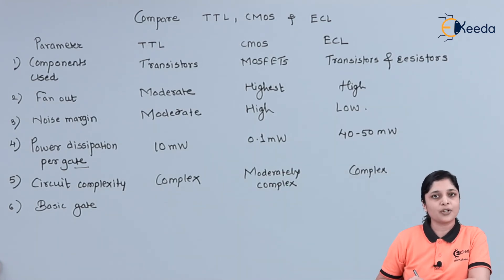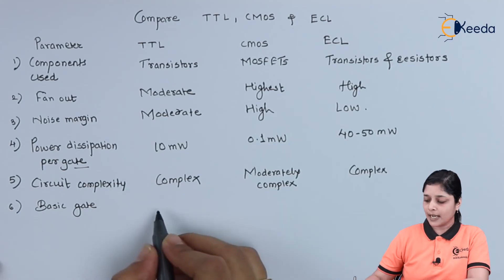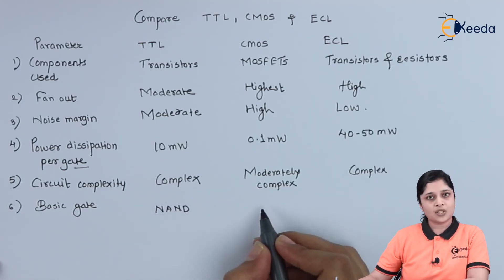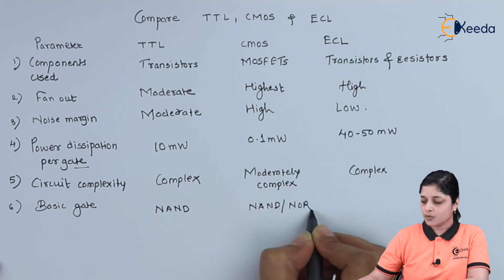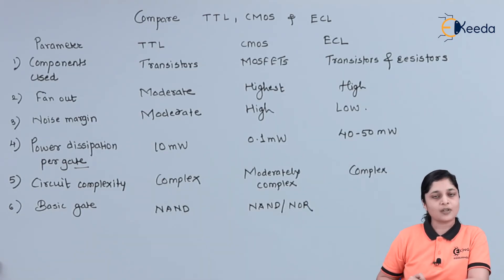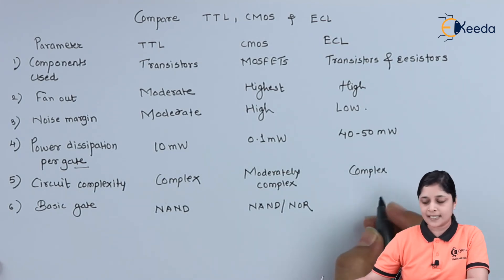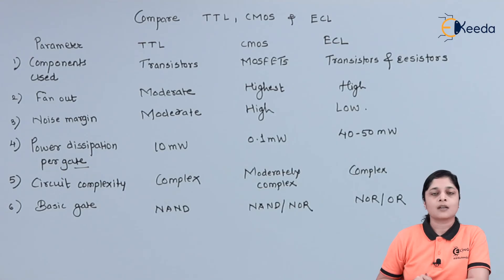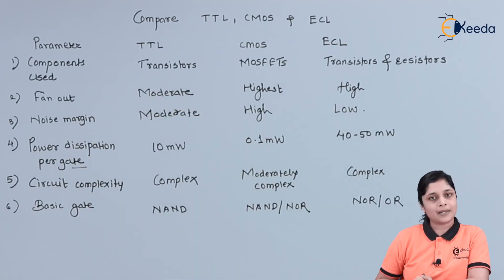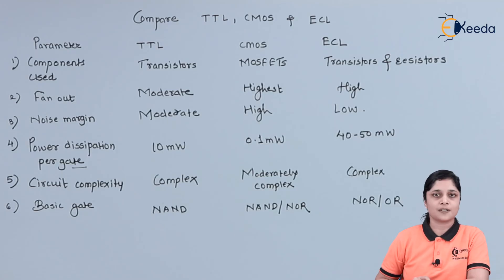The next parameter is the basic gates supported. With TTL you can design the NAND gate. With CMOS you can design NAND or NOR gates. With ECL you can design NOR or OR gates. These are the basic gates of logic circuits that can be designed using each of these technologies.